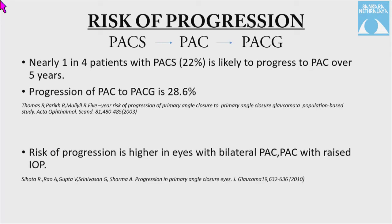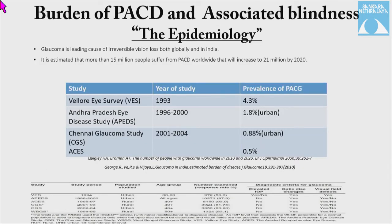Regarding risk of progression, Thomas et al. stated that nearly 1 in 4 patients — approximately 22% — with primary angle closure suspect is likely to progress to primary angle closure over 5 years, with progression from primary angle closure to primary angle closure glaucoma being 28.6%. This risk is higher in eyes with bilateral primary angle closure or with raised IOP.